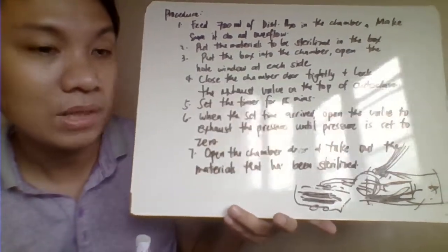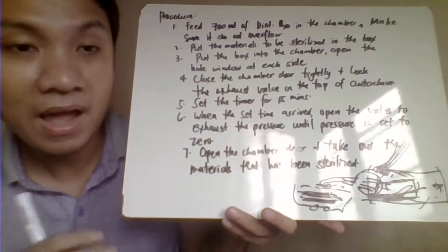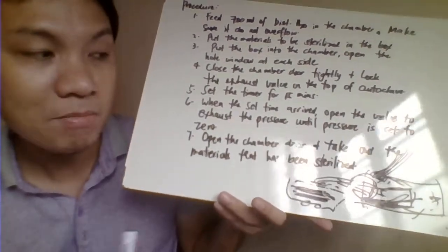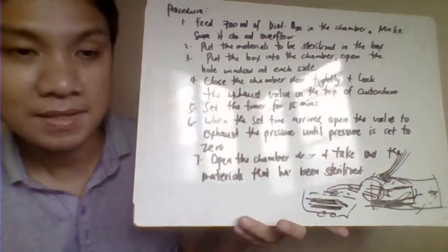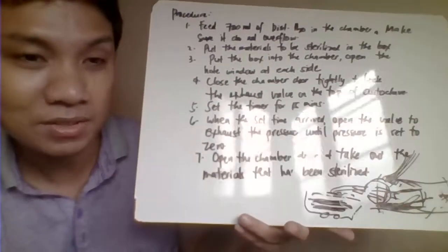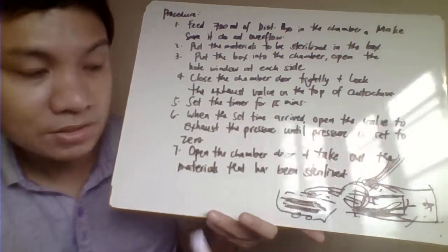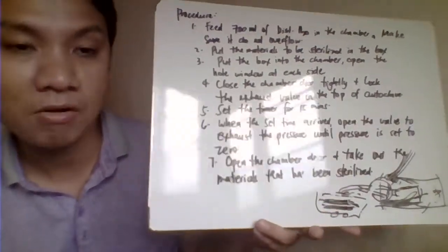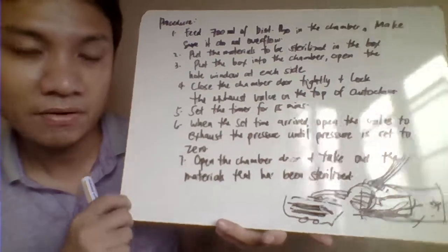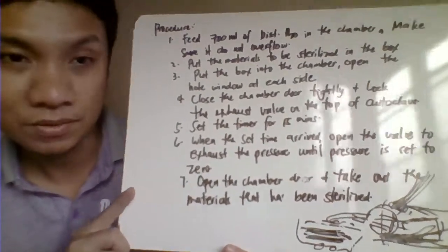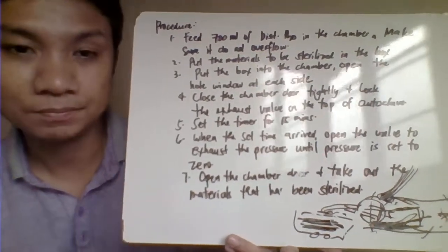Wait until all the pressure within your chamber is released before you open. Never ever open the chamber if you haven't released the pressure—it will explode. Release the pressure, and after it's been released, you can now open and take your sterilized materials. It's very easy, our autoclaving procedure. Thank you.